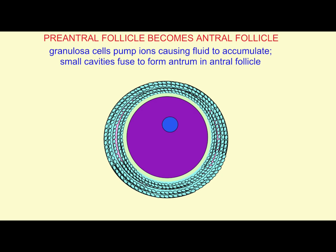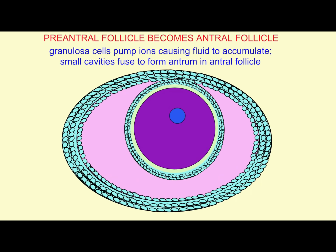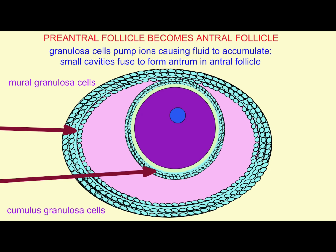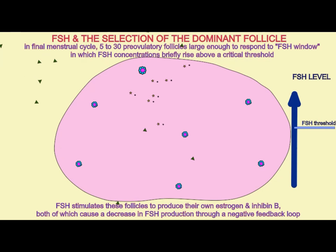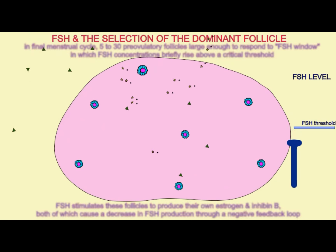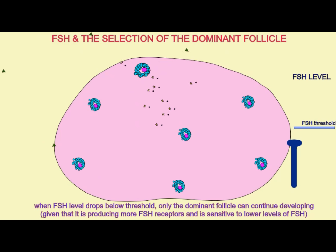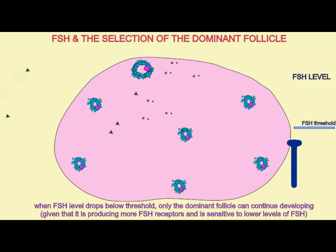Follicles do not respond to LH during the majority of their development because they do not synthesize LH receptors until the very final stages of the mature follicle. Thus, as FSH levels begin to drop in the pre-ovulatory phase of a menstrual cycle, the follicle begins to respond more to LH, and this final stage of follicular development is known as the LH-dependent phase.